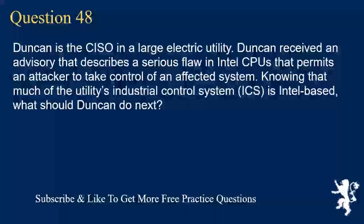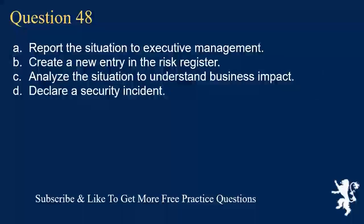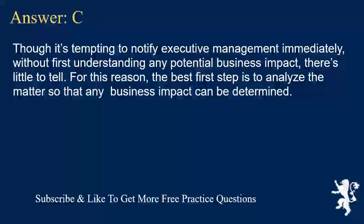Question 48. Duncan is the CISO in a large electric utility. Duncan received an advisory that describes a serious flaw in Intel CPUs that permits an attacker to take control of an affected system. Knowing that much of the utility's industrial control system (ICS) is Intel-based, what should Duncan do next? A. Report the situation to executive management. B. Create a new entry in the risk register. C. Analyze the situation to understand business impact. D. Declare a security incident. Answer C. Though it's tempting to notify executive management immediately, without first understanding any potential business impact, there's little to tell. For this reason, the best first step is to analyze the matter so that any business impact can be determined.